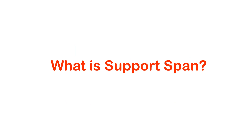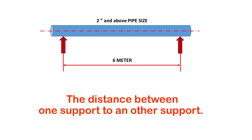Now let's understand what is support span. Support span is the distance between one support to another support. It is derived based on calculation for different sizes. Different sizes will have a different span length. Generally, two inch and above pipe sizes will have a span of six meters and above.